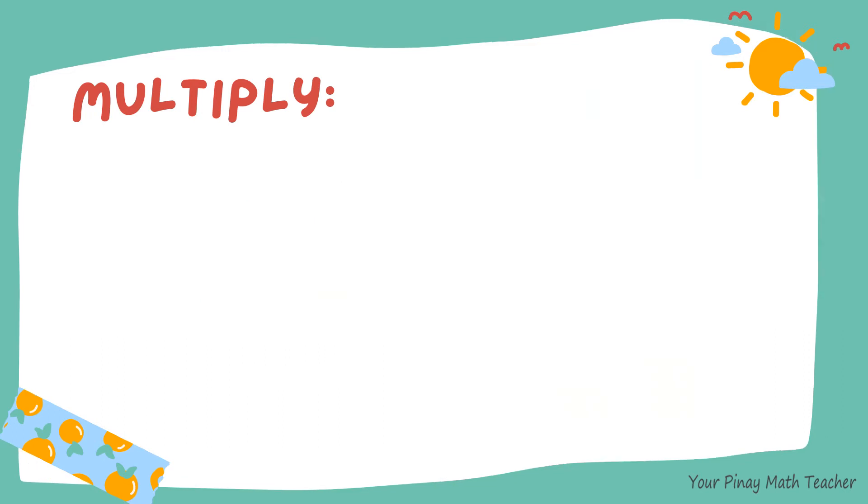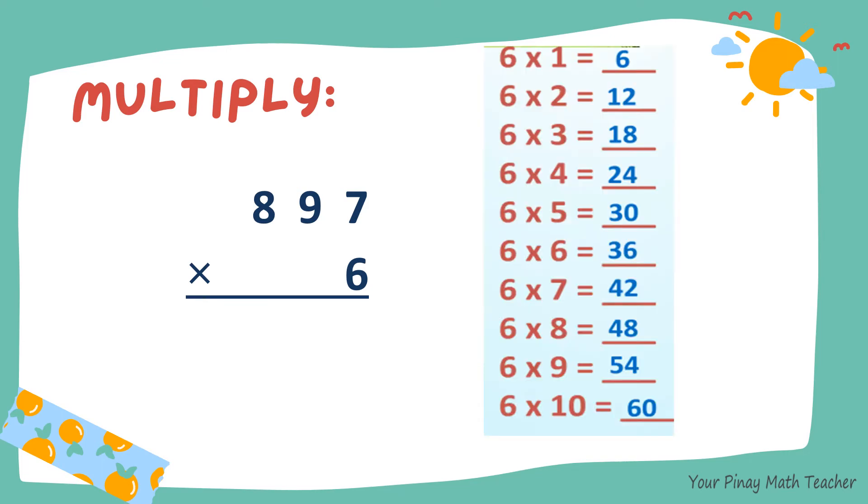At this time, let's multiply 897 by 6. 6 times 7 is 42. So 2 carry 4. 6 times 9 is 54. Plus 4, 58. 6 times 8 is 48. Plus 5, 53. So the product is 5,382.